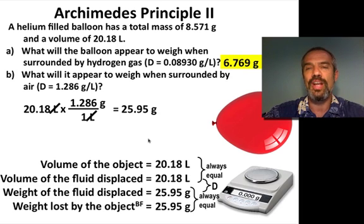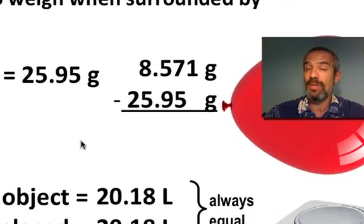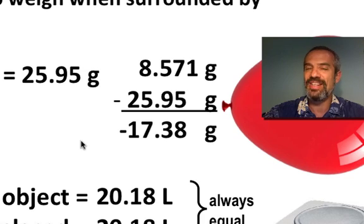So, this time, our 8.571 gram balloon will have lost, appeared to have lost, 25.95 grams. This gives us a negative value, just like it did in the previous problem with a stone that was submerged in the liquid mercury.